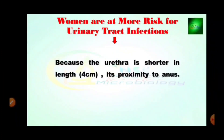Women are at more risk of urinary tract infection because the urethra is shorter in length — approximately 4 cm — and its proximity to the anus. In women, UTI infections are most commonly found because of this shorter length and proximity to the anus, approximately 4 cm.